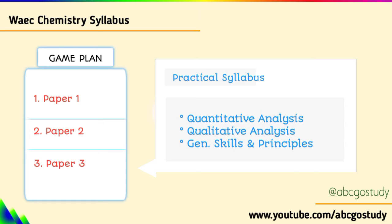The second question covers qualitative analysis. You need to understand tests for the following cations with different reagents, such as dilute NaOH. You need to know about Al³⁺, Zn²⁺, Pb²⁺, and the likes. Qualitative analysis is about determining the quality — the identity — of a substance or chemical, while quantitative analysis is about the quantity. The third aspect covers general skills and principles of chemistry.